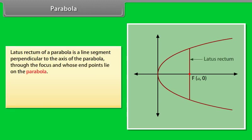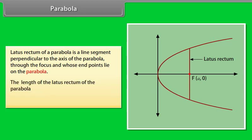Latus rectum of a parabola is a line segment perpendicular to the axis of the parabola, through the focus, and whose endpoints lie on the parabola. The length of the latus rectum of the parabola y² = 4ax is 4a.